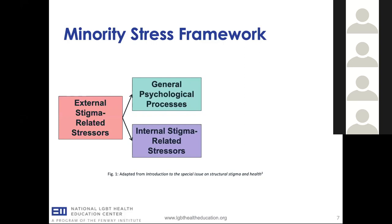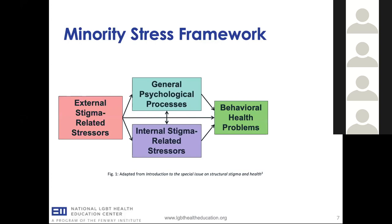External stigma-related stress can cause internal stigma-related stress — internalized homophobia or transphobia, believing all the negative things society says about your identity, expecting rejection, and identity concealment out of fear of being mistreated. All that we think is related to the higher prevalence we see in the research: depression, anxiety, post-traumatic stress disorder, substance use disorder, decreased self-care, decreased engagement in primary care and healthcare, and down the road a much higher prevalence of various physical health problems.